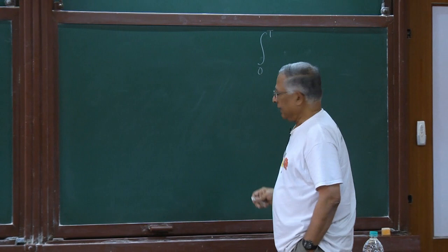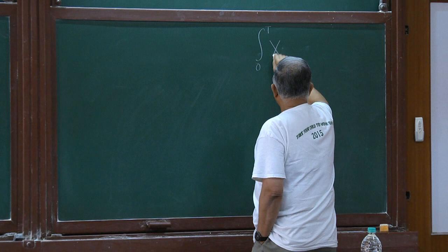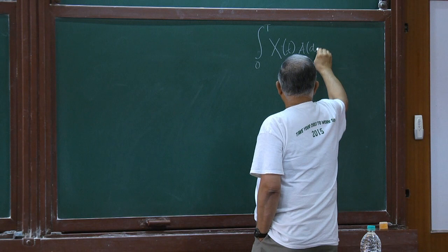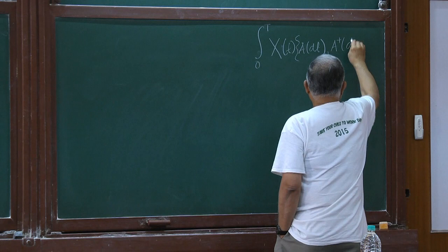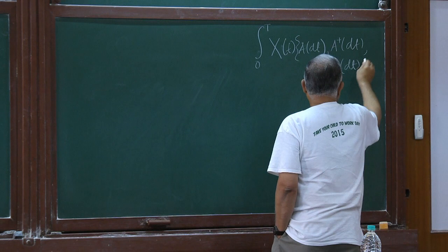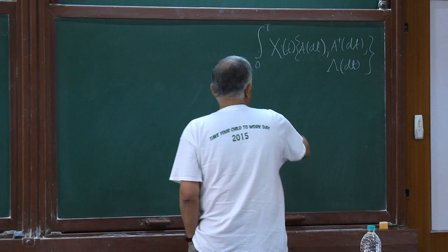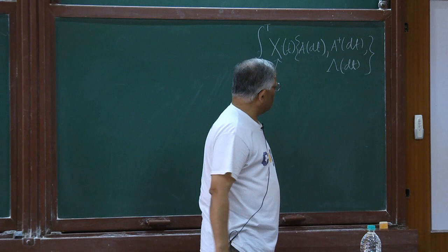We integrate over a finite time horizon. There will be coefficients x_t, and I want to integrate with respect to these three integrators, and that is what Hudson-Parthasarathy theory attempts to do. With a certain class of nice properties you define these things.